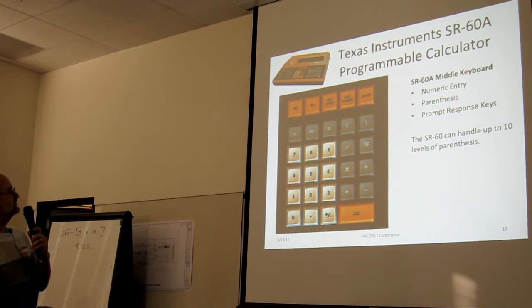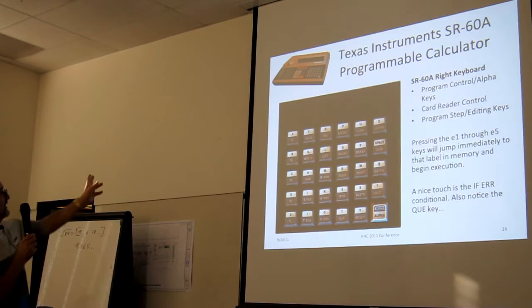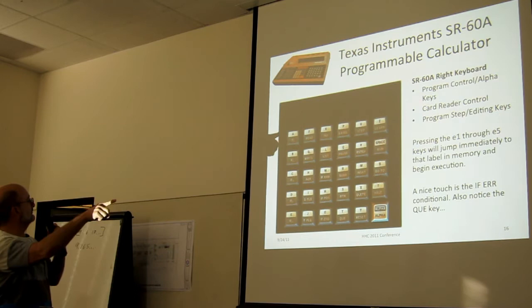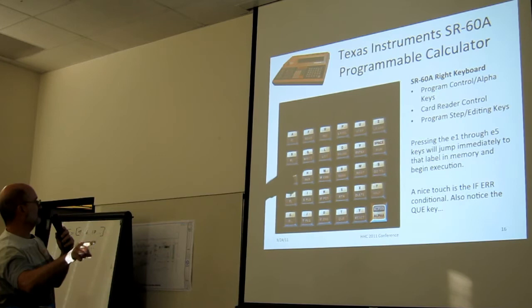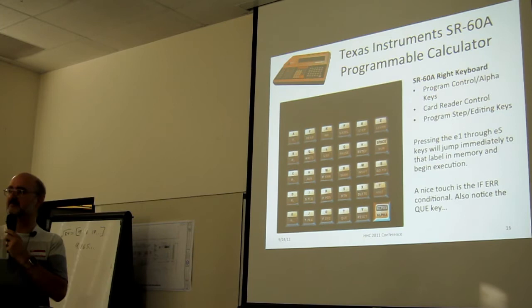On the right side of the keyboard, you've got more alpha keys. You've got more labeled keys, E1 through E5. And most of the other functions are read, indirect, write, list, if positive, subroutine, jumps, just the program control stuff. Because this is a keystroke programmable calculator like we're all familiar with.